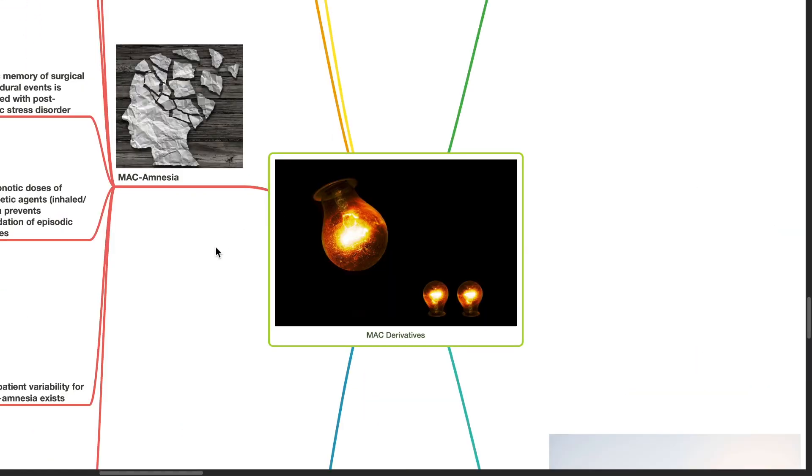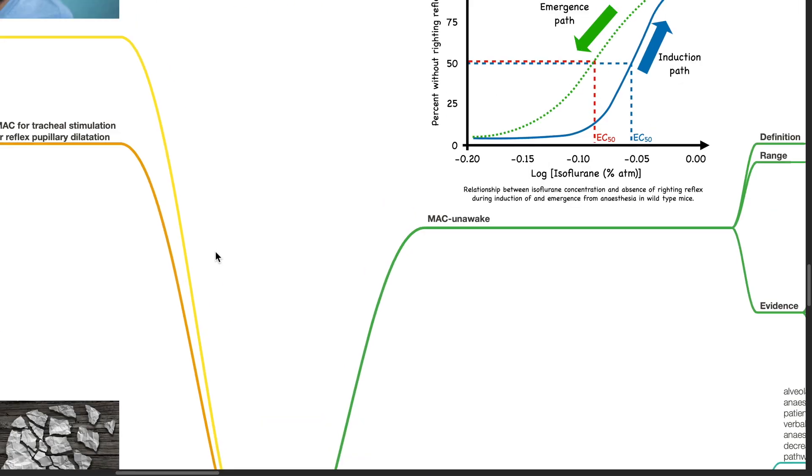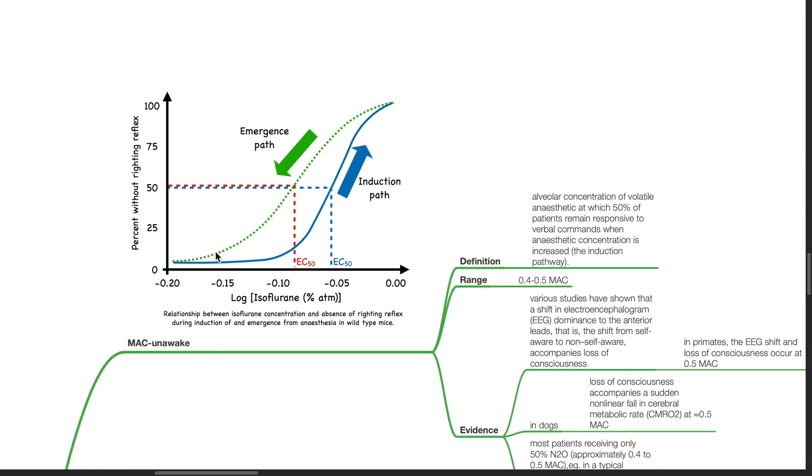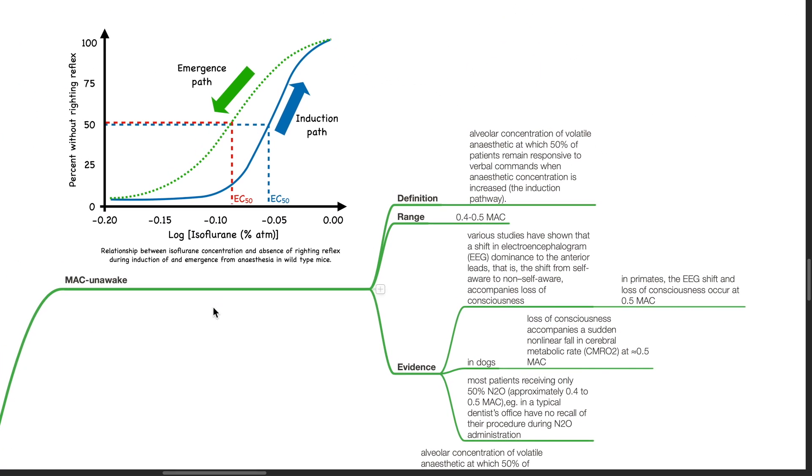Next, we move on to MAC derivatives. MAC unawake is defined as the alveolar concentration of volatile anesthetic at which 50% of patients remain responsive to verbal commands when anesthetic concentration is increased, i.e. the induction pathway. The range for MAC unawake is 0.4 to 0.5 MAC.